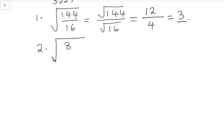We have root 8 over 9. We follow the same principle that we stated just above, root A over root B. This would give us root 8 over root 9.